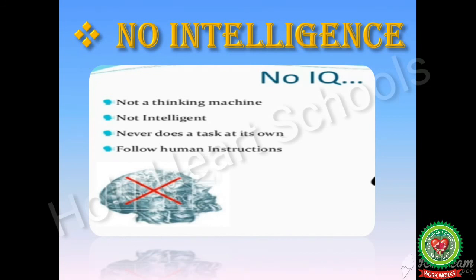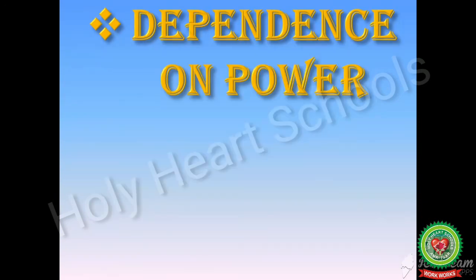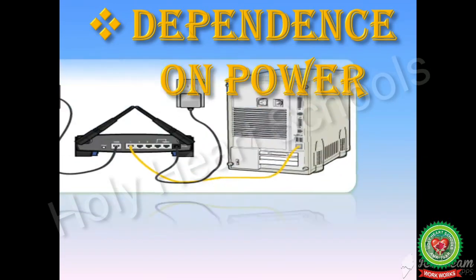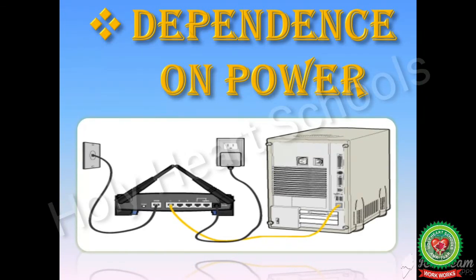The third limitation is dependence on power. A computer is an electronic machine, and its dependence on power makes it costly. It cannot work without electricity. Today we have discussed characteristics of computer and limitations of computer. Try to solve the back exercise. Thank you and have a nice day.